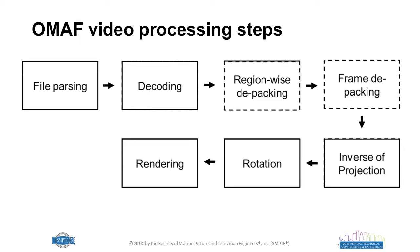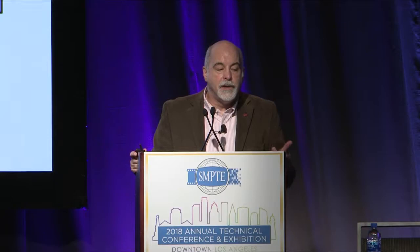The OMAF processing steps involve stitching, rotations, and projections, followed by frame packing if region-wise packing is used. Then the content is encoded, encapsulated, and transmitted. On the decode side, the steps are reversed: parse the file, decode the imagery, undo region packing and frame packing, apply the inverse projection, perform any rotations, and then render to the display.